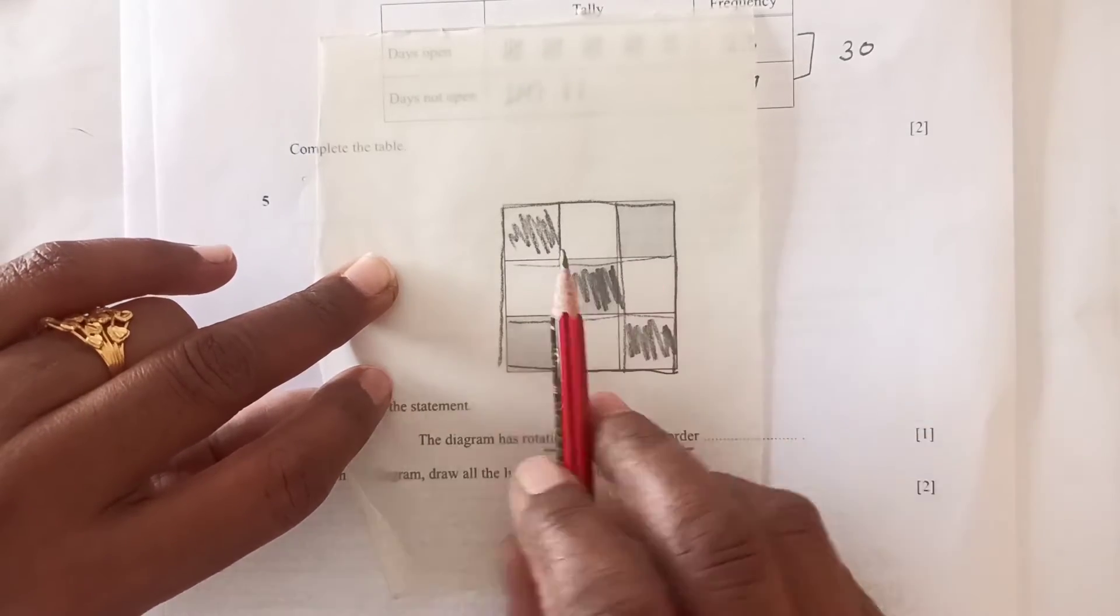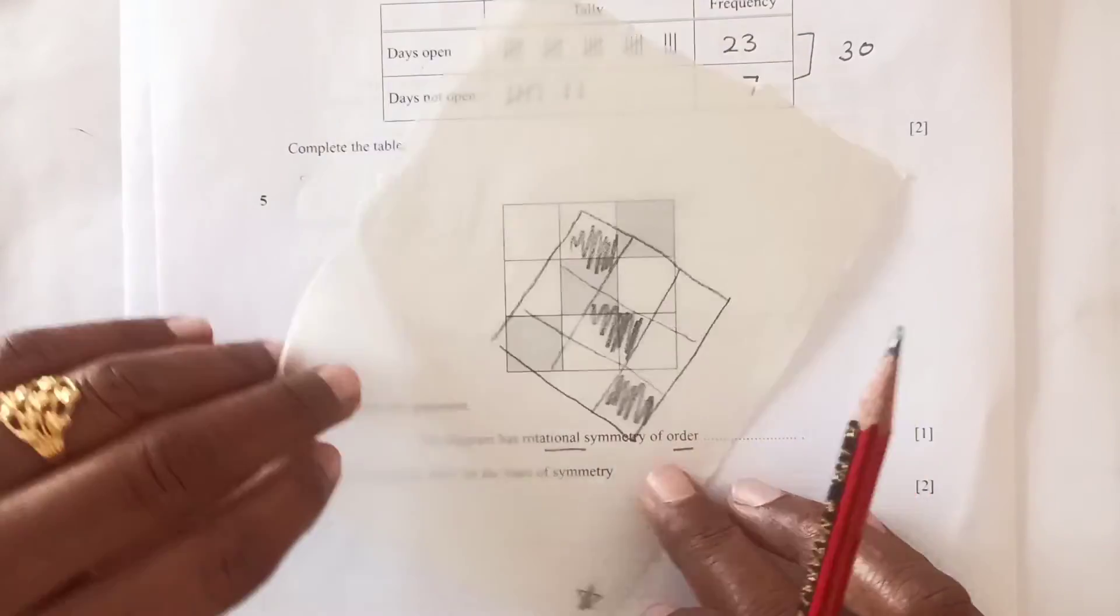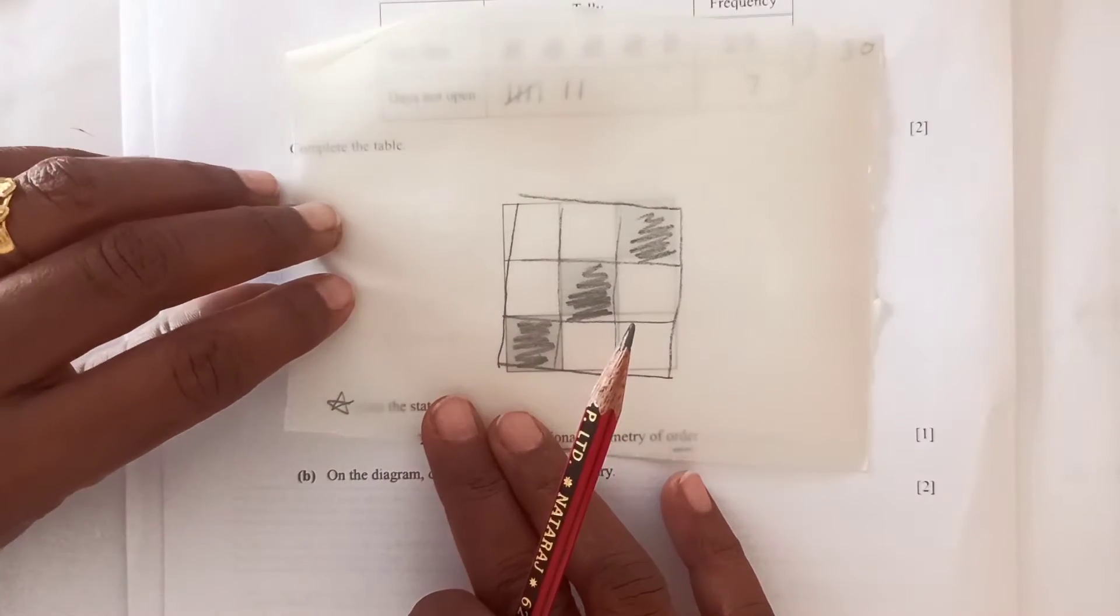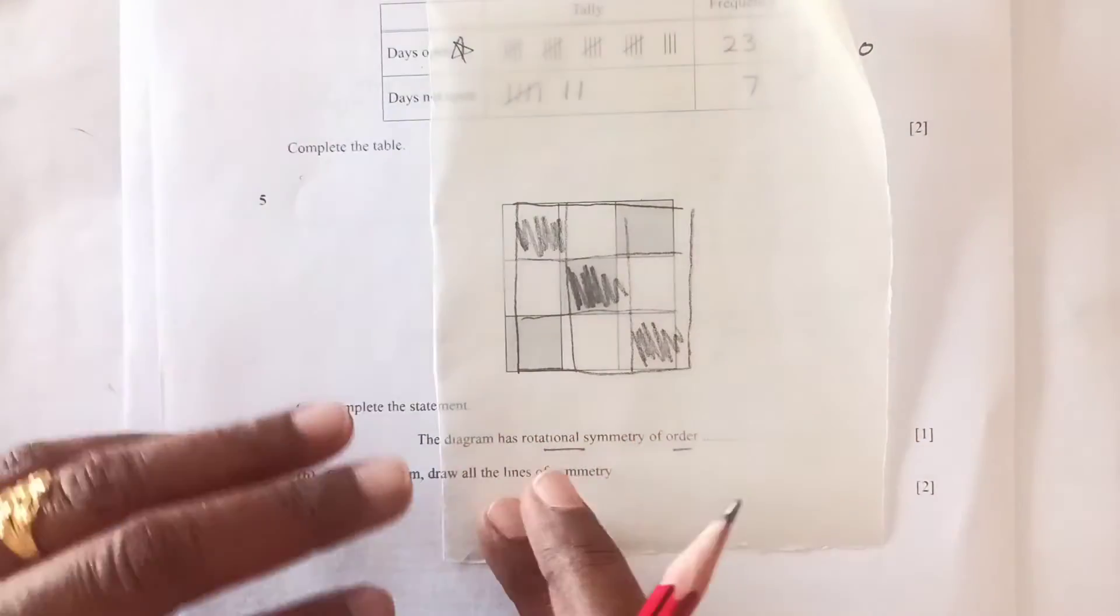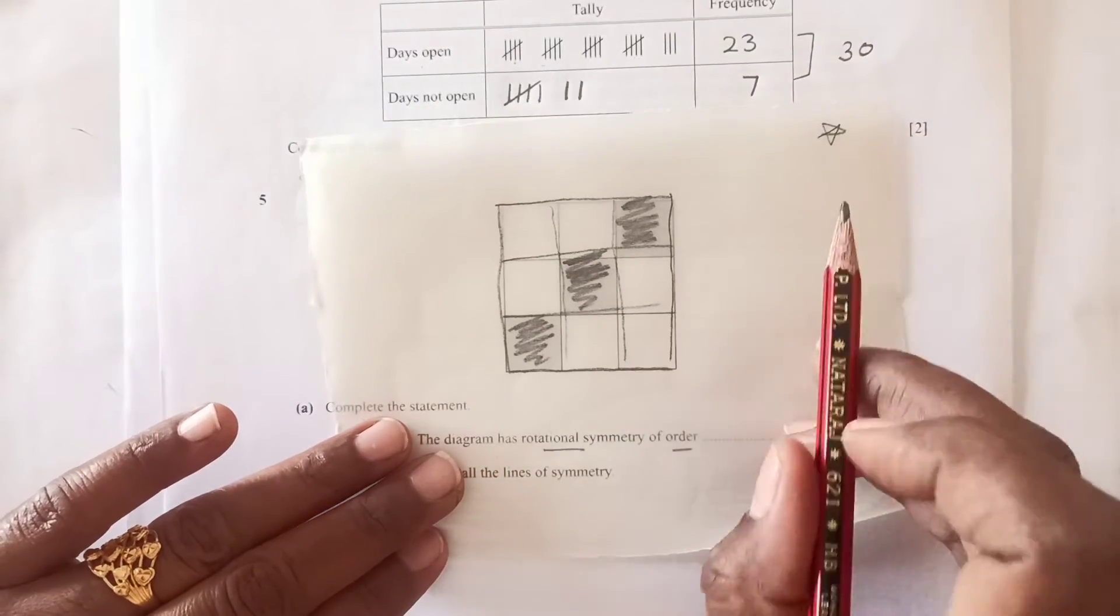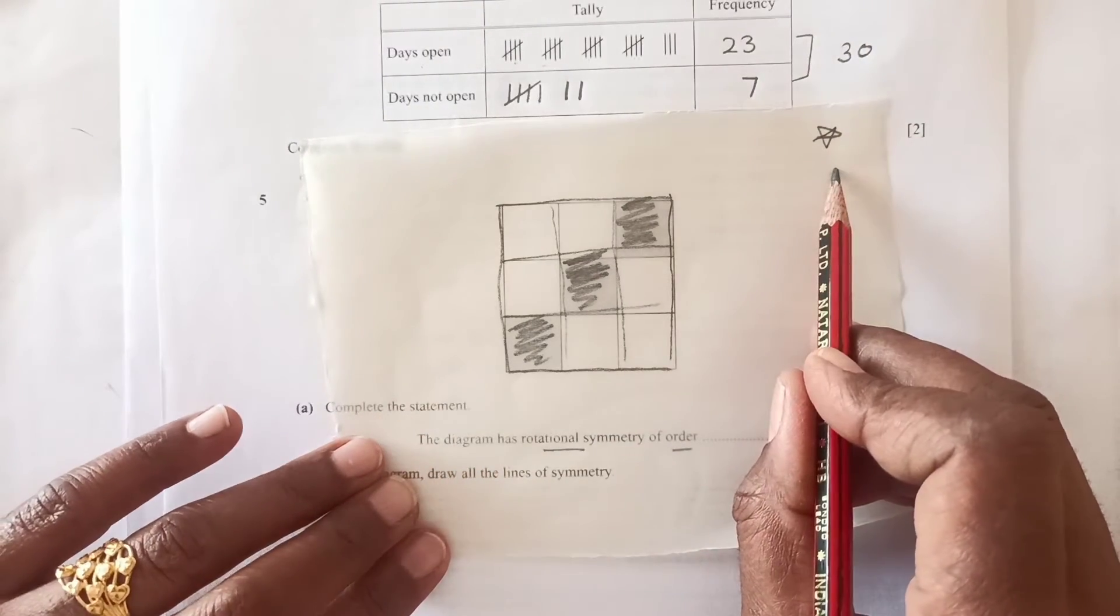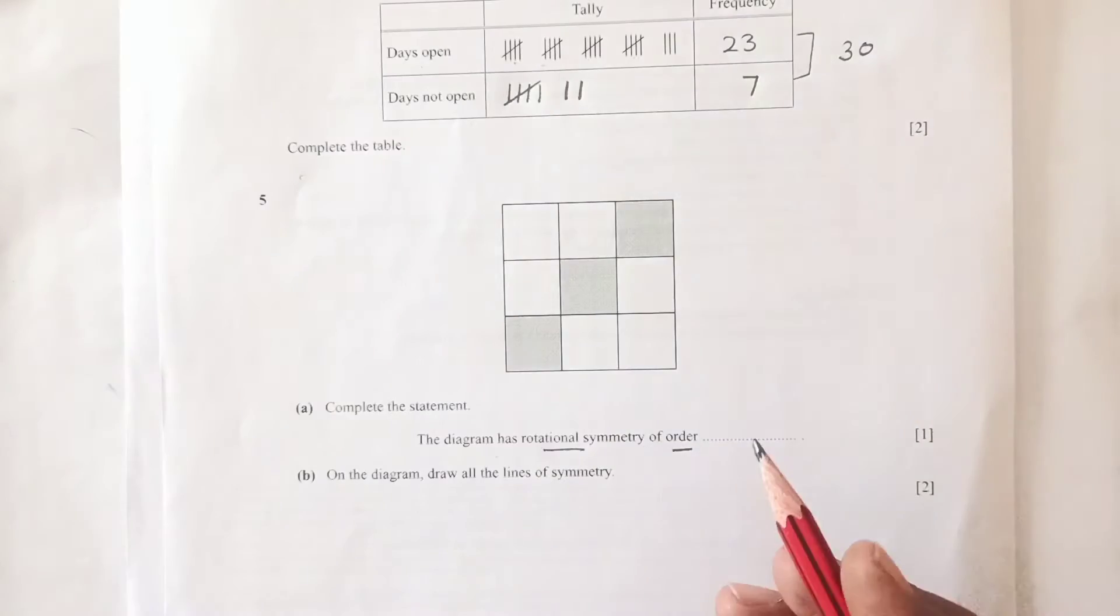When you do this, your star is here from where we started. So two times we got the same shape, so the order is two.